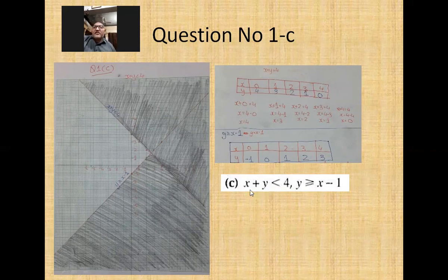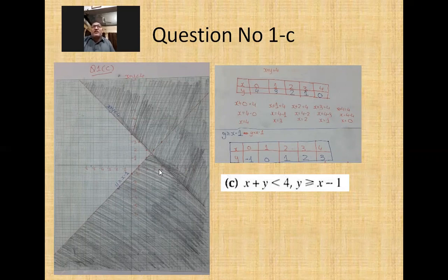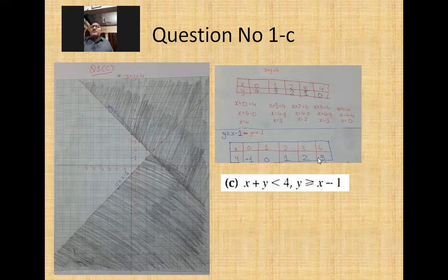Since the inequality is x + y < 4 — no equals sign — this line should be dotted, remember that. For the second inequality y ≥ x − 1, I take values x = 0, 1, 2, 3, 4 giving y = −1, 0, 1, 2, 3. I plot these points and join them with a straight line, then prolong it.